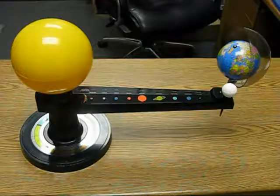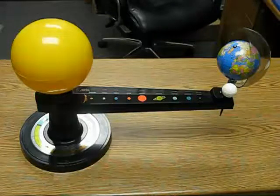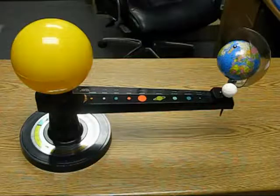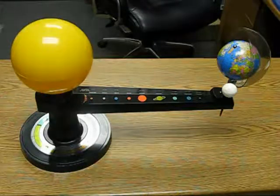Number seven, why there are phases of the Moon. Number eight, why we only see one side of the Moon. Number nine, why there are eclipses of the Sun and Moon. Number ten, why there are tides.